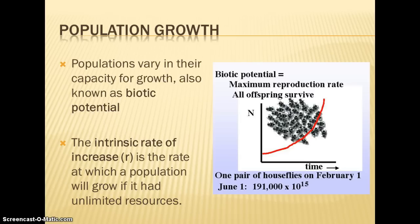Different species or different populations grow at different rates, and their capacity varies as well. Their capacity for growth is known as the biotic potential — that is, if all offspring survive and there are unlimited resources. The intrinsic rate of increase is how fast the population will reach that capacity, once again, if it had unlimited resources.